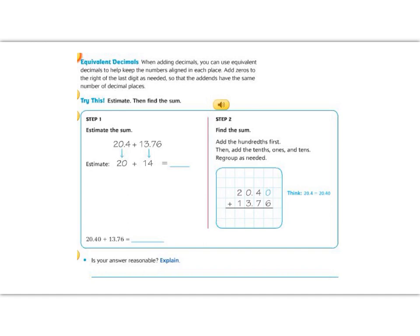It says equivalent decimals. When adding decimals, you can use equivalent decimals, that means equal, to keep the numbers aligned in each place. That means we are going to add zeros in any empty holes so that we have the same number of decimal places. Let's try this in the problem below.